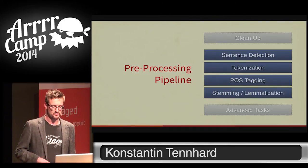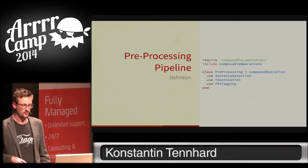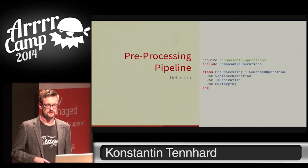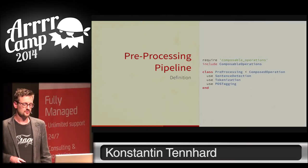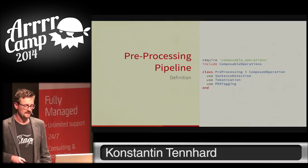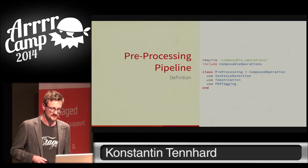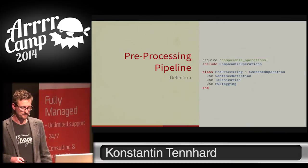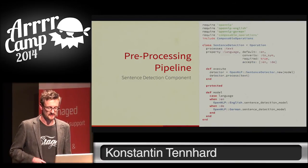Here's how such a pipeline looks in Ruby using composable operations. We build a class that inherits from composed operation and use the macro method 'use' to tell the pipeline which components it consists of. The order matters — in this case we first perform sentence detection, then tokenization, then POS tagging. Individual components are slightly more complicated, but I'll walk you through the first one.